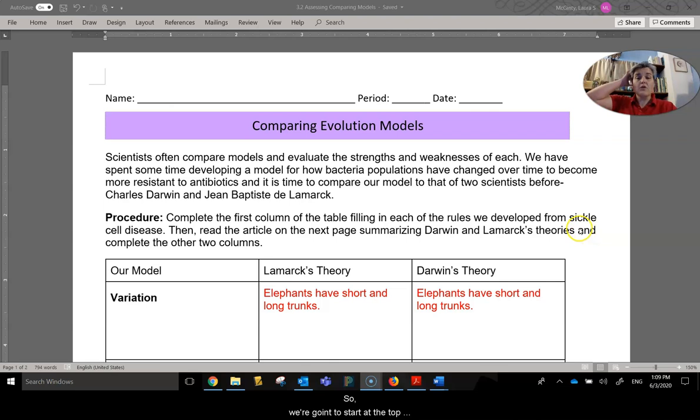So we're going to start at the top with the graphic organizer. You were given a chart here that has the variation, the three types of ecologies and change over time on the left column. Then you have a column for Lamarck's theory, so that's Jean-Baptiste de Lamarck, and you also have a column for Charles Darwin's theory. So what we're going to do for the sake of simplicity is we're just going to go row by row. So we're going to look at variation first.